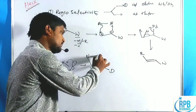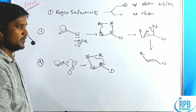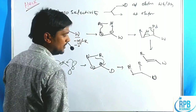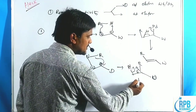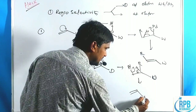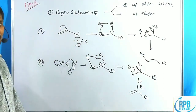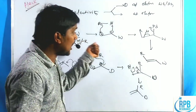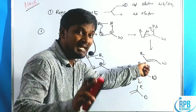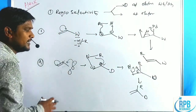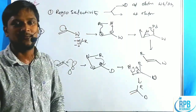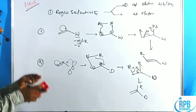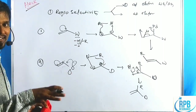So the key difference: with electron-withdrawing groups, the R group attacks the terminal position of the olefin. With electron-donating groups, the R group attacks the gem (internal) position — the same carbon bearing the donating group. These two cases are the major differentiation in regioselectivity based on withdrawing versus donating groups.